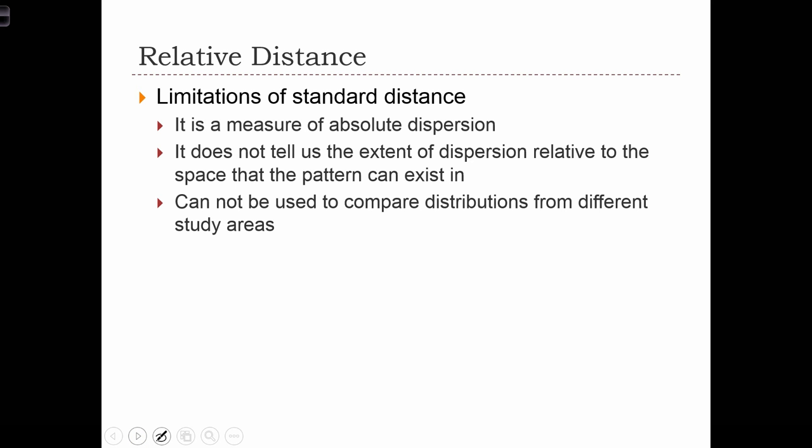Last class, we learned about the standard distance statistic, which is a measure of absolute dispersion in a point distribution. The standard distance statistic does not tell us the extent of dispersion relative to the space that the pattern can exist in, relative to the size of the study area. For this reason, we cannot use the standard distance statistic to compare the distributions from different study areas.